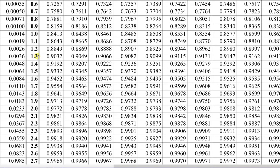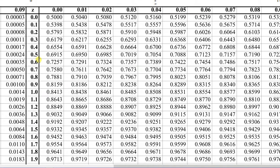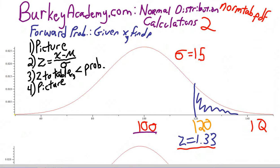Now if we look up this 1.3, remember that the columns have the second decimal place, we get .9082, and we always have to remember that this table always gives us the probability on the left side, or the less than probability.